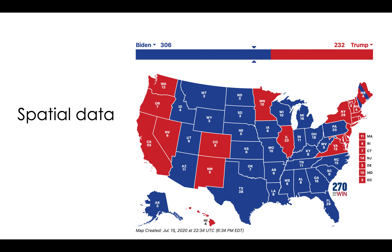We also have spatial data. The other one is about time; this one is about space. This is the US election result in different states, and you see that by looking at a simple picture you can get so much information. You could get the number of states, by using the colors you can see who won where — which party won which state — and what was the electoral vote in each one.